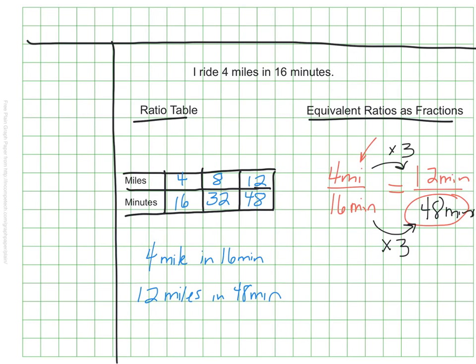I know that it's 12 miles in 48 minutes. Same result, but two different strategies. One is building a table, and one is using fraction form.